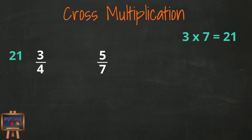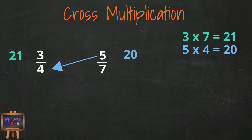Next, we take the numerator of our second fraction, 5, times the denominator of our first fraction, 4, and we get 20. We write the 20 next to this numerator, and now we can see that 21 is larger than 20. It's really that simple.